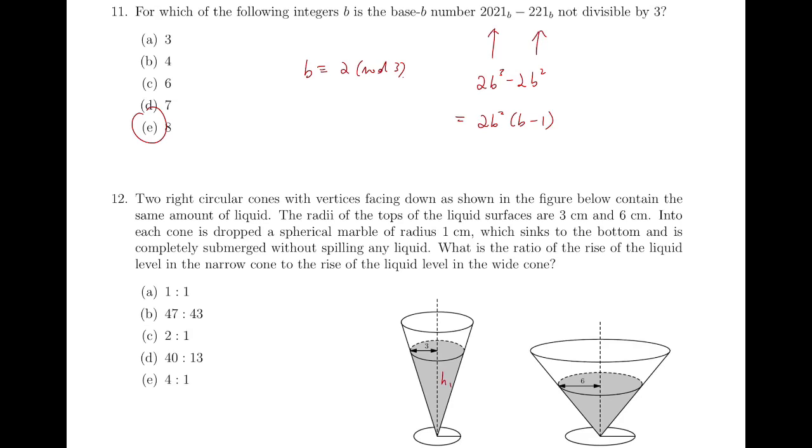Question 12. Initially, let H1 and H2 be the height of the liquid inside the two cones, then the volumes will be 1 third times pi times 3 squared times H1, and that's equal to 1 third times pi times 6 squared times H2, then simplifying H1 equals 4H2.